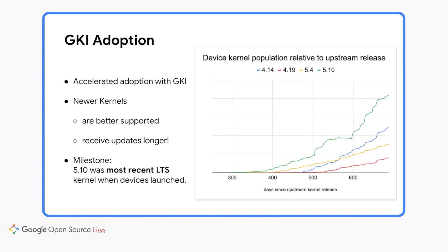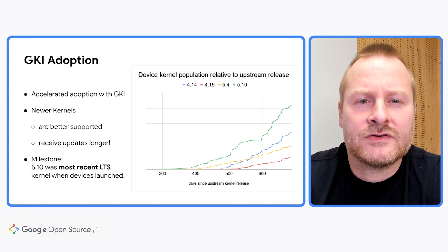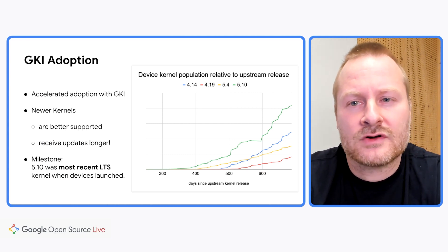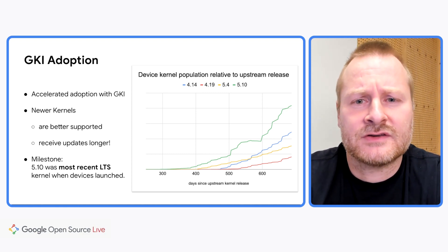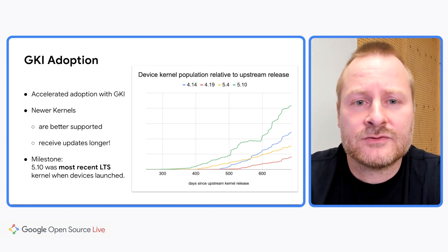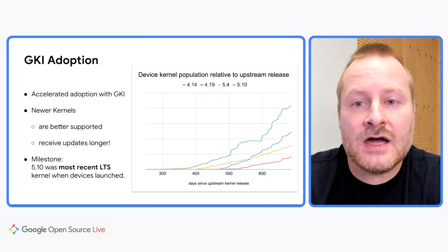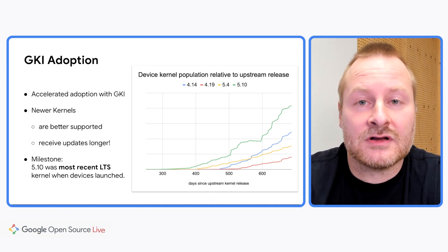This chart gives an overview of the adoption of kernel branches on release devices in the field. The absolute scale is not really of relevance, but the relative scales. As you can see, along the process of developing GKI, kernels reach the field with decreasing delay. As mentioned, 5.10 in the field was available less than a year after the upstream release. Newer kernels are usually better supported and also receive updates longer. What also sticks out in this chart is 5.10 with the strongest early adoption rates. Another interesting fact is the adoption of 5.4: Android 12 could be launched with either 5.4 or 5.10, and partners dominantly picked the younger kernel, leaving 5.4 behind.